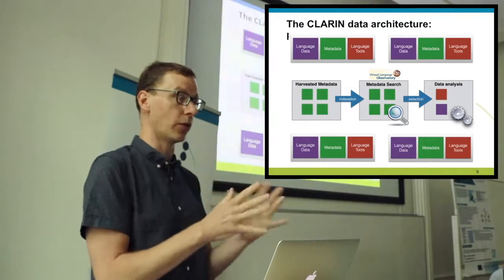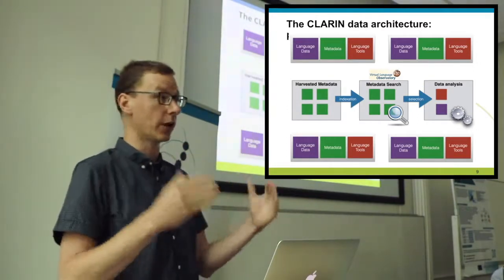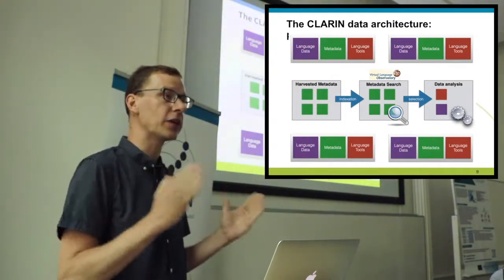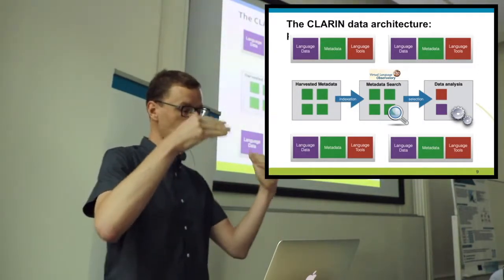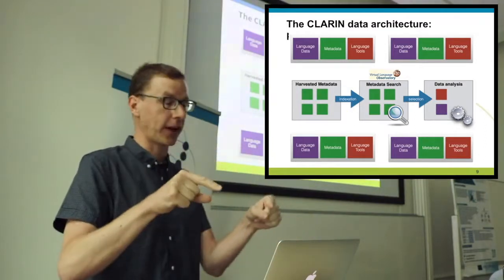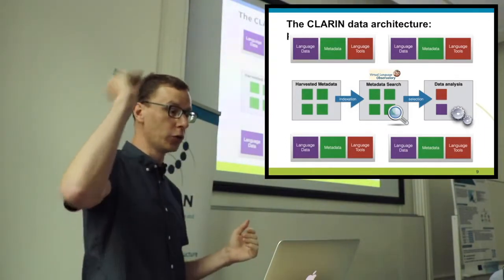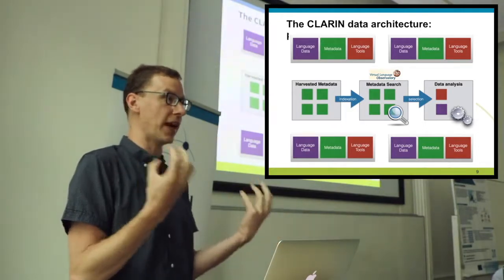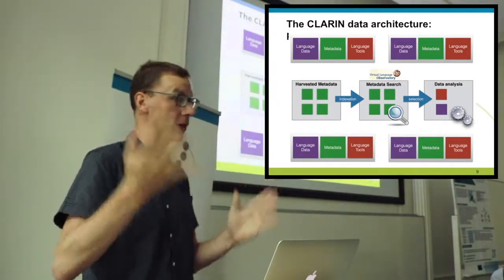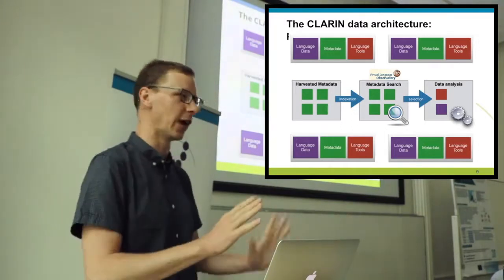After identifying those Polish novels, it is also possible to search for matching applications to process them — for instance, named entity recognition, or automatic speech recognition for a speech file. It is possible to detect all the tools which can process the resource you've selected, and then perform data analysis relying on tools available through the CLARIN infrastructure, based on metadata matching.